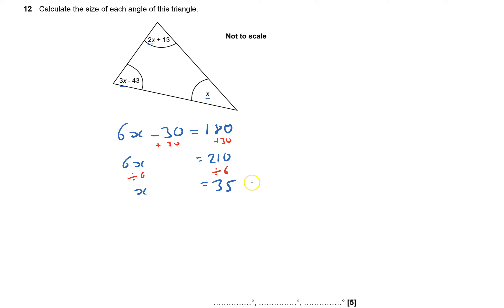So I know this one's 35 degrees, so one of them is 35 degrees. But I need to calculate this one here and that one there, two X's. So two X's would be 70 plus 13 which is 83 degrees. So I've got 83.